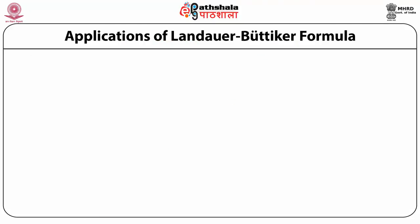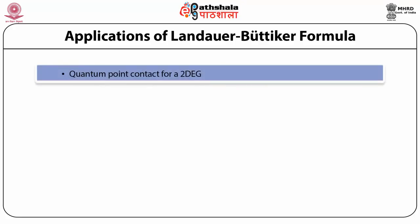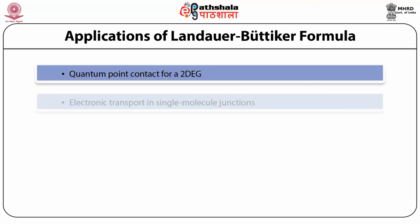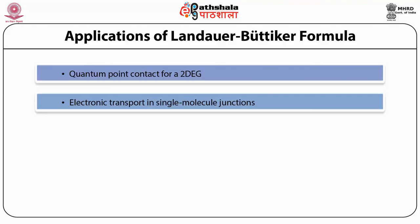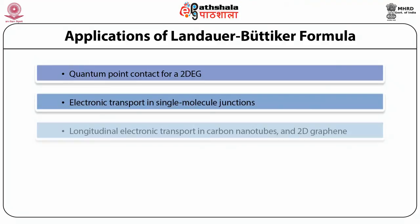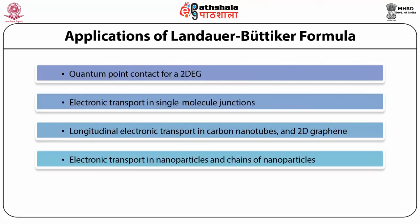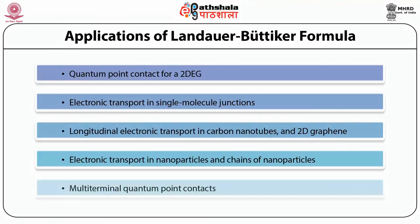The applications of the Landauer-Büttiker formula include: first, the quantum point contact for a 2DEG; second, electronic transport in single molecule junctions; third, longitudinal electronic transport in carbon nanotubes and 2D graphene; fourth, electronic transport in nanoparticles and chains of nanoparticles; and fifth, multi-terminal quantum point contacts.